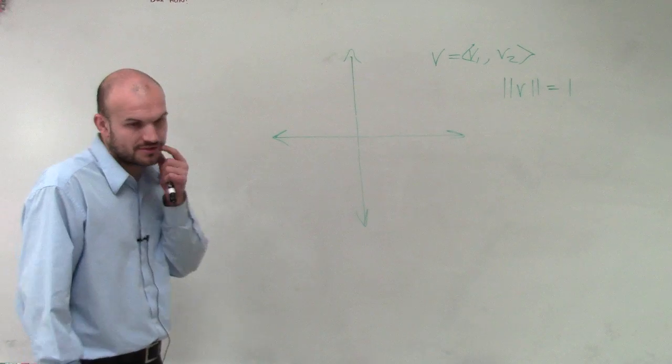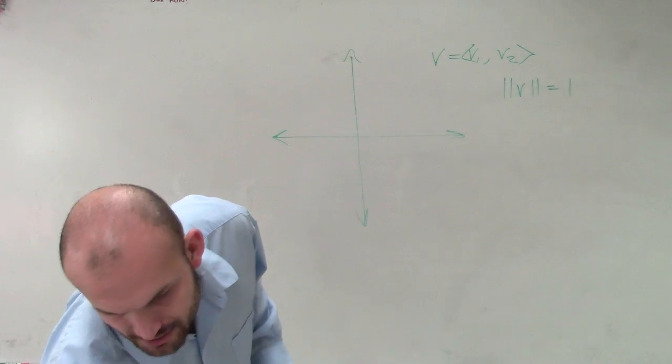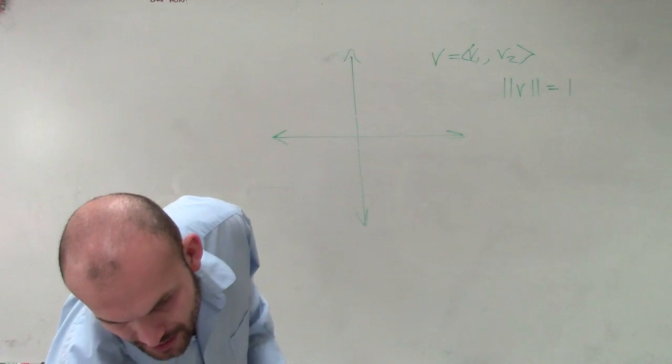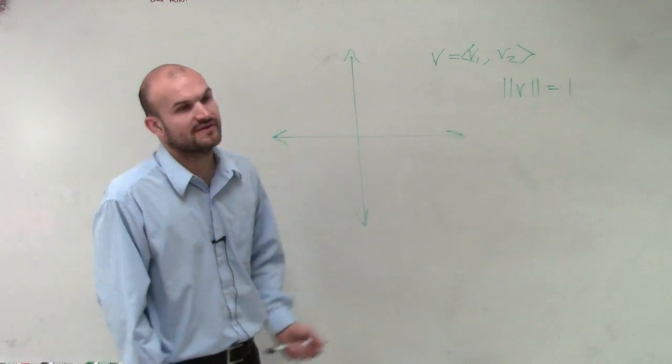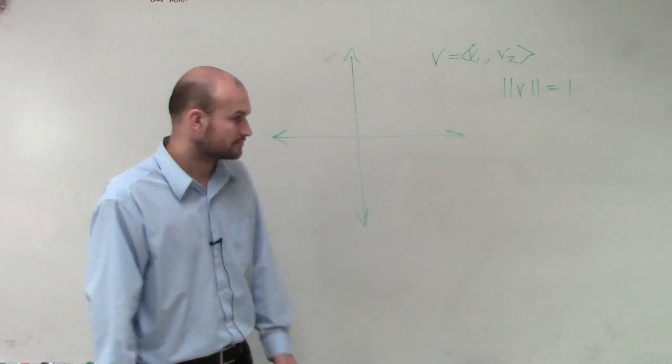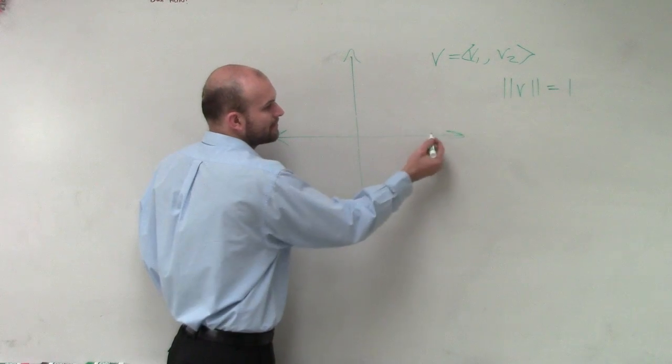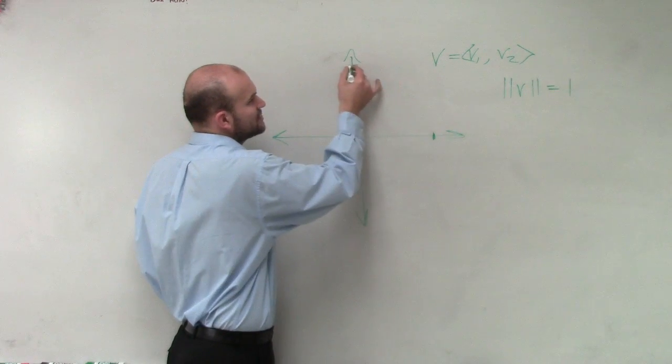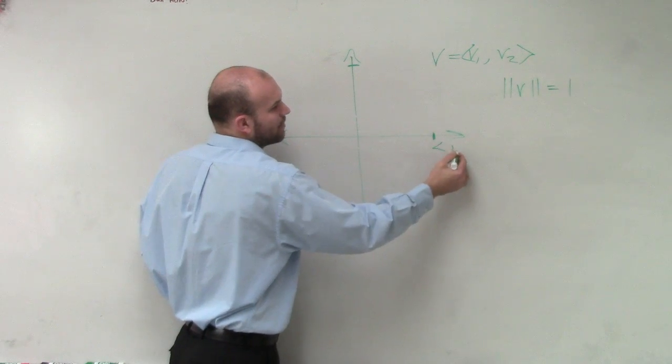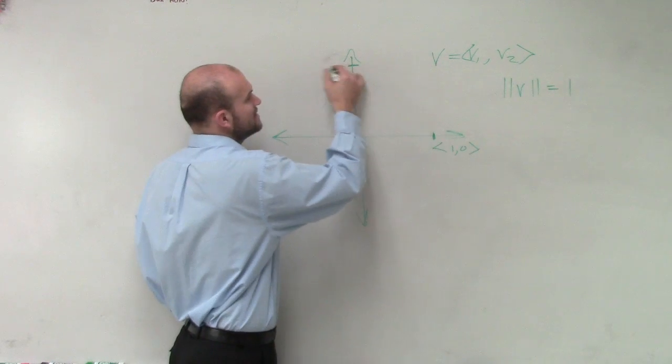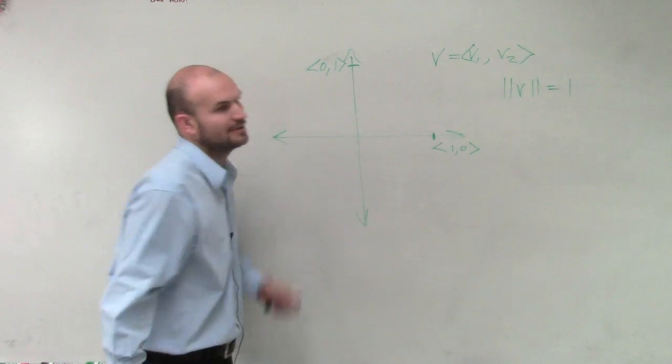Now, what we're going to do is we're going to talk a little bit about some special unit vectors. We know a vector equals V1 and V2, but what if we have our two unit vectors on our x and y axes, where I have this vector is 1 comma 0, and this one is at 0 comma 1.